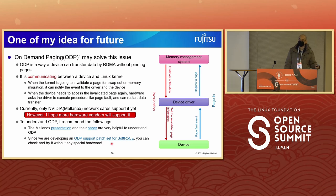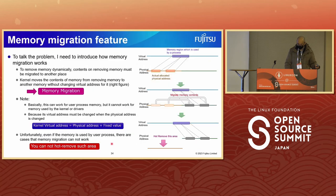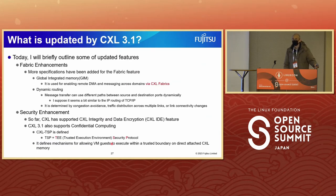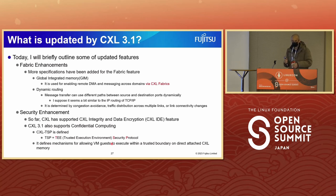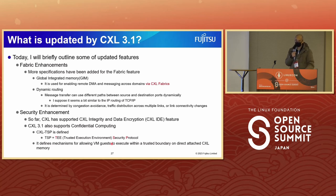Q: Thank you for your detailed explanation. Could you go to the slide showing the new features of CXL 3.1? In that slide, CXL 3.1 supports DMA and messaging across domains via CXL fabric. What does 'domain' mean in this context, and what is the use case? A: In the CXL specification, 'domain' often means servers. So Global Integrated Memory provides the future of cross-server RDMA via CXL fabrics. RDMA over CXL fabric is one use case.